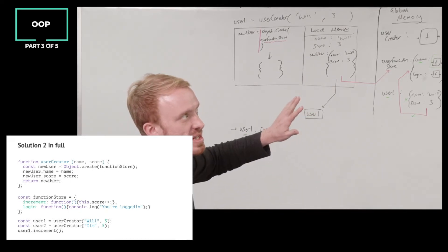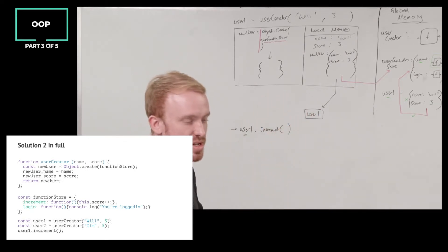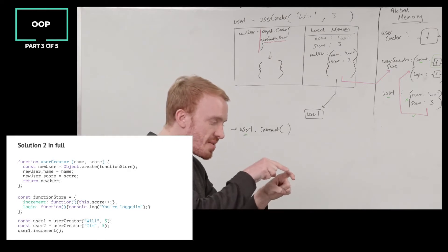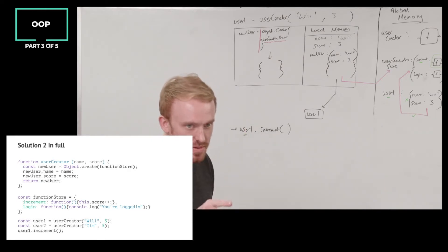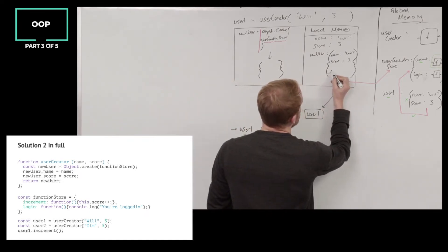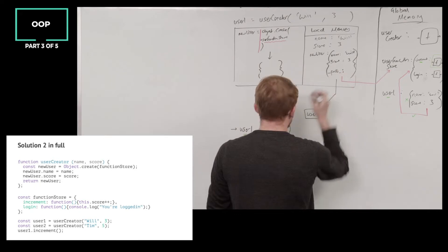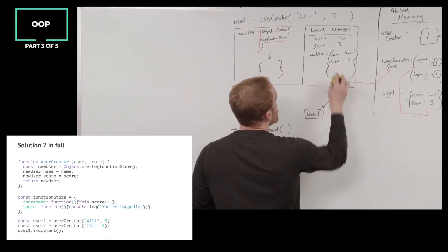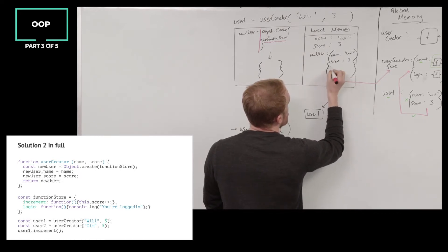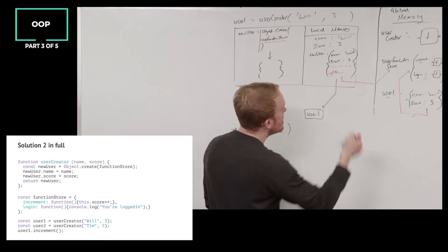It's not like our double square bracket scope property that we can't see. We can't dot-access it or console log it directly. If we were to console log our new user object and press a little down arrow, we see a bunch of hidden properties. One of them is double underscore proto double underscore. We have to console log it and press a down arrow in the console to see the hidden properties.